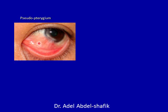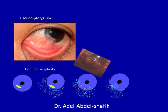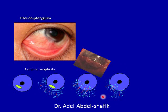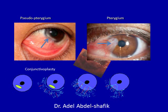Pseudopterygium is a triangular encroachment of the conjunctiva onto the cornea. It occurs in certain cases following conjunctivoplasty — a technique used when there is resistance or delayed healing of an ulcer. The nearby conjunctiva is dissected and pulled to cover the ulcer area to provide more blood supply and immune defense. In the following days the elastic conjunctiva recedes back, except at the site of adhesions, leaving a triangular encroachment. This must be differentiated from true pterygium, which is usually at the horizontal level — nasal or temporal — while pseudopterygium can come from any location.